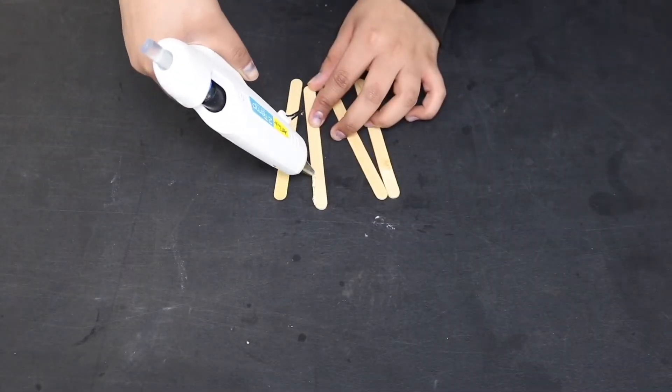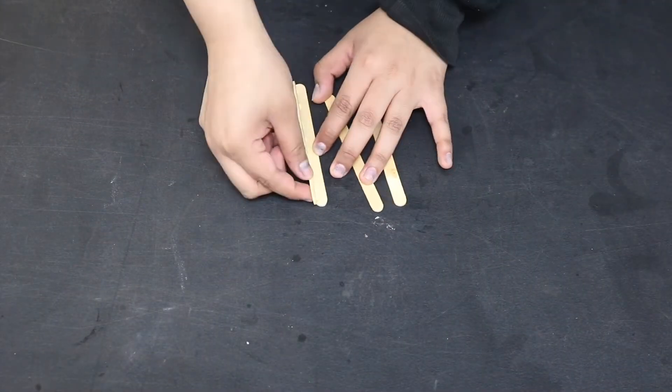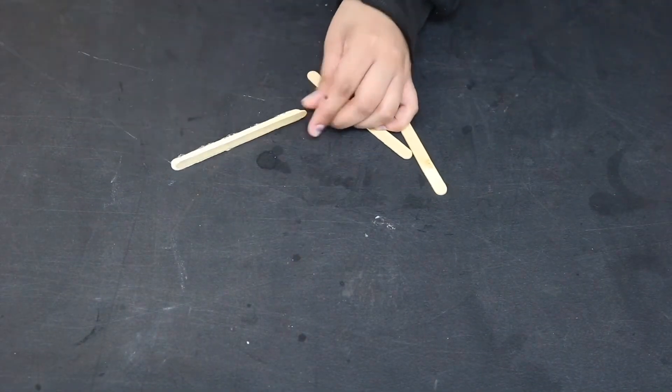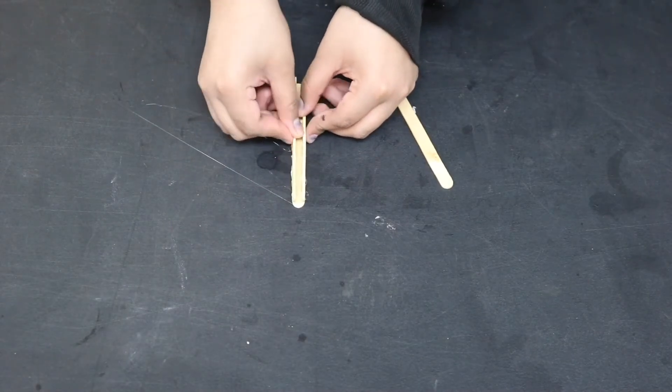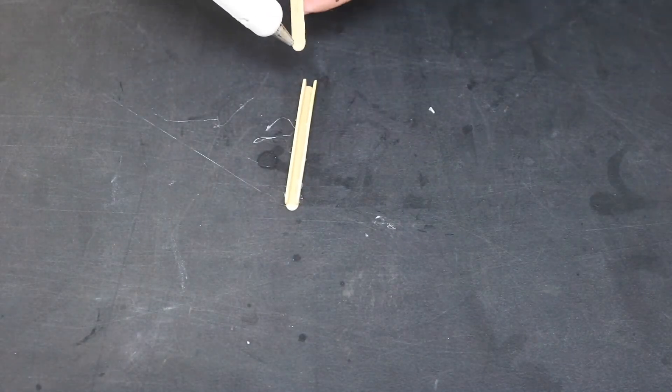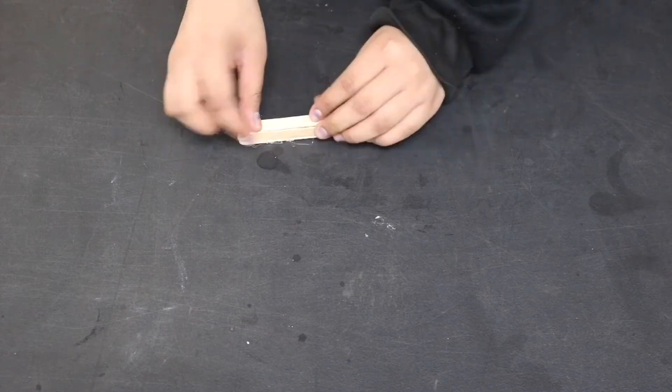Once you are done designing, it's time to start building. I will begin by gluing my popsicle sticks along the edges. This will create a little box shape. I will be doing this twice since I need two of these.